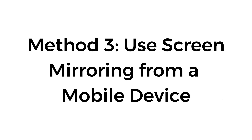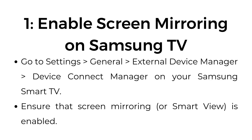Method number three: use screen mirroring from a mobile device. Step number one: enable screen mirroring on Samsung TV. Go to Settings, General, External Device Manager, Device Connect Manager on your Samsung Smart TV. Ensure that screen mirroring or Smart View is enabled.